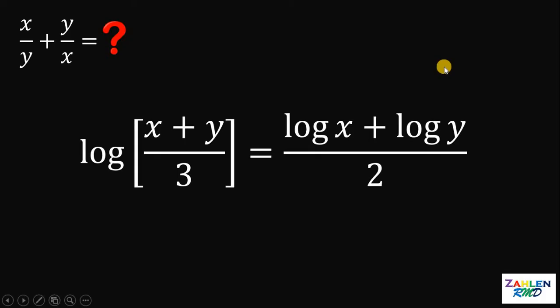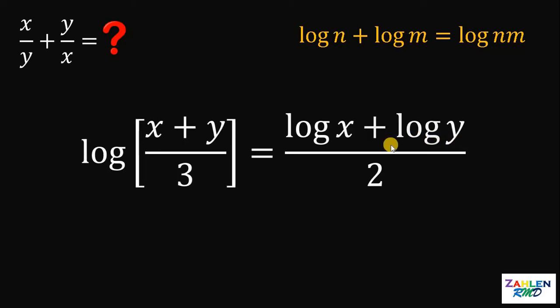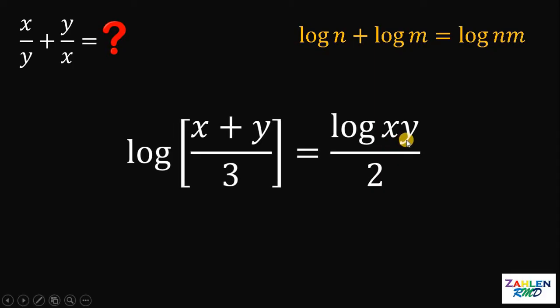First thing to do is to recall this identity, that if we have logarithm of n plus logarithm of m, it is equivalent to logarithm of n times m. Therefore, this logarithm of x plus logarithm of y can be written as logarithm of x times y.